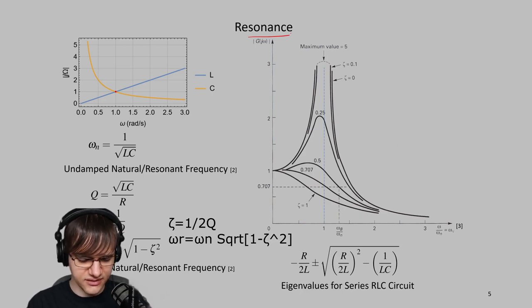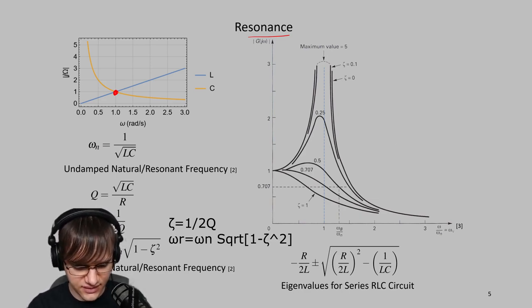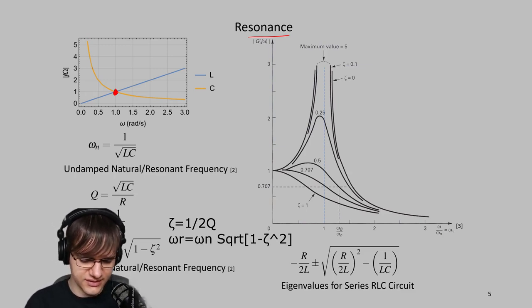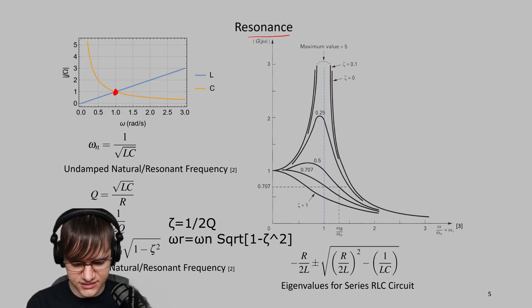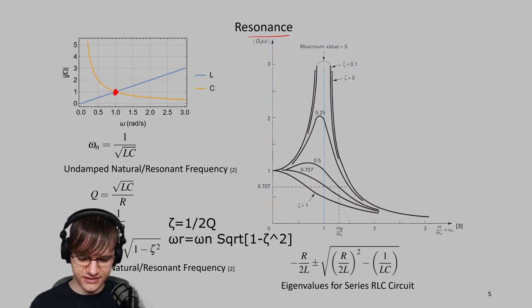I'll talk about resonance really quick. If your reactance of the capacitor and reactance of the inductor equal each other, you're going to get this resonance point right here. And if you're operating below the resonance, the circuit's going to act capacitively, and then if you're above the resonance, it's going to be more inductive.